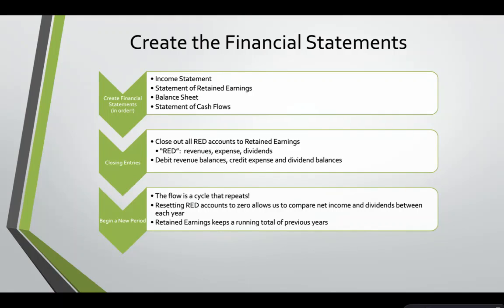Once we have done that we will do our closing journal entries. We will close out RED accounts, which are revenues, expenses, and dividends. These are all temporary accounts that only last throughout one period and will zero out for the beginning of the next period. These accounts are all closed into the retained earnings account. After we have done our closing entries we will be ready to start our next period.